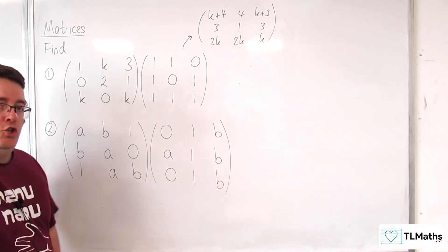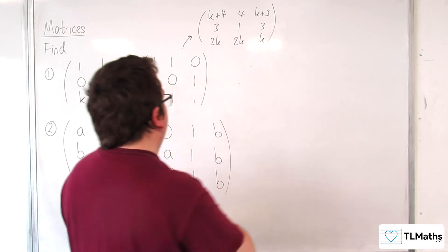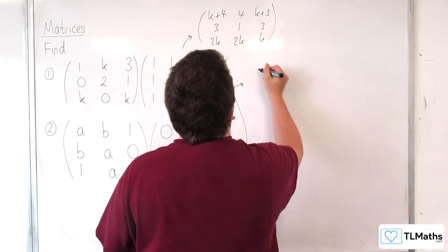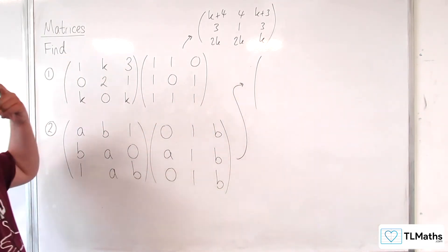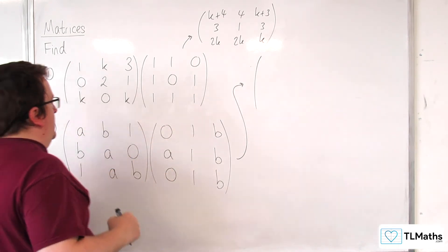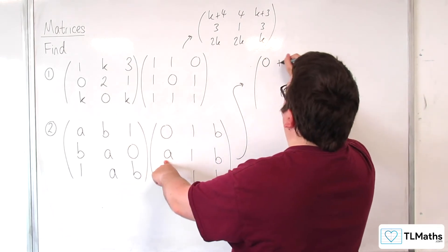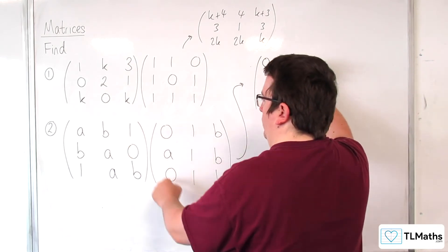Let's take a look at question number 2. So this looks a little bit more fiddly. So I'm going to go straight up here. So, ab1 times 0, a0. So a times 0, b times a, 1 times 0.